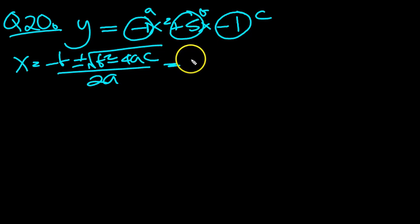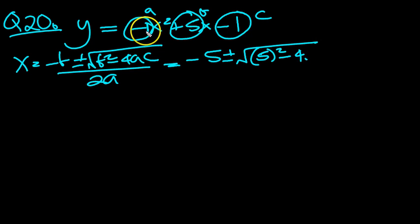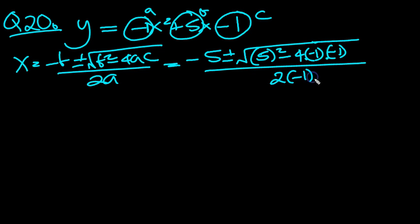Put the numbers in then. Minus b is minus 5, plus minus, square root of, b squared, 5 squared, minus 4 times a, which is minus 1, times c, which is minus 1. I've put little brackets to avoid any confusion around those numbers. All over 2 lots of a, little bracket, 2 lots of minus 1.